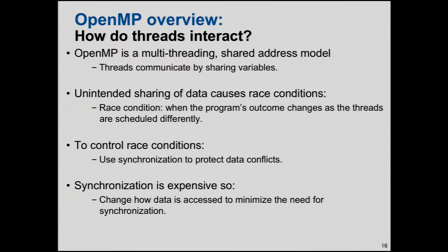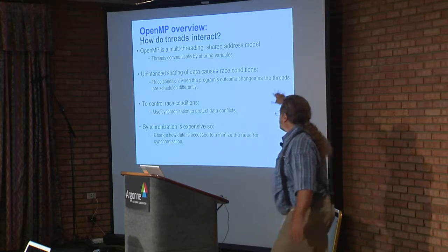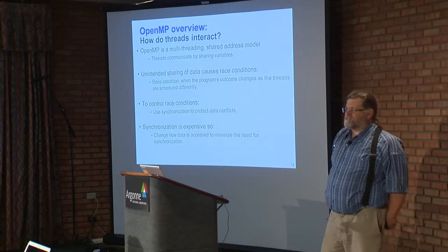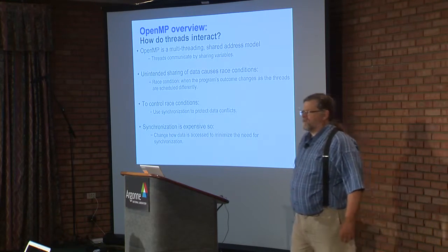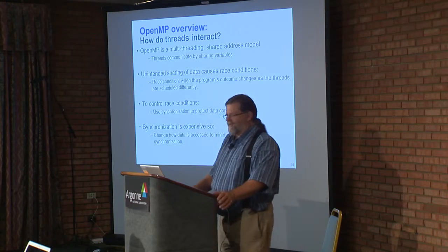Race conditions are something to be very scared of — keep that in mind when you think about multi-threaded programming. How do you get rid of race conditions? You control your data environment, which we'll talk about, or you add synchronization constructs. A synchronization construct lets you order reads and writes and order thread execution. But synchronization is very expensive, so if you can minimize it by managing your data environment, your program runs really fast.